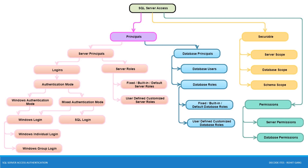We are left with the last component of SQL Server Access Authentication: Permissions. As the name suggests, Permissions are all about what you can do. Permissions are granted to logins over Securables or required controls and functions. We have discussed SQL Server Access and its components. We will be discussing each component in detail in coming chapters. Stay tuned.